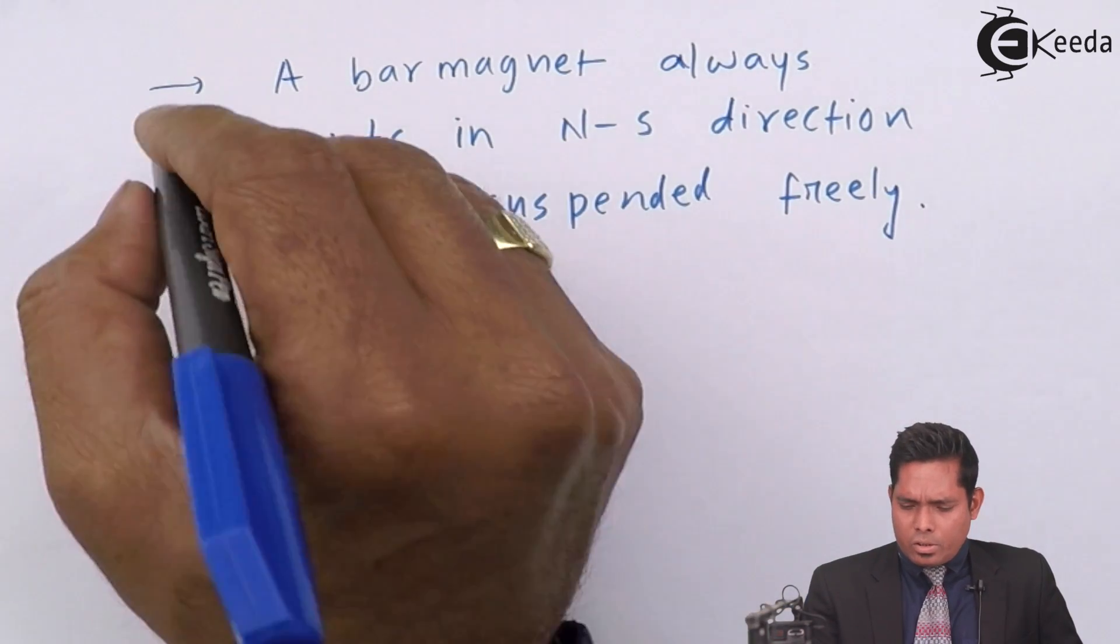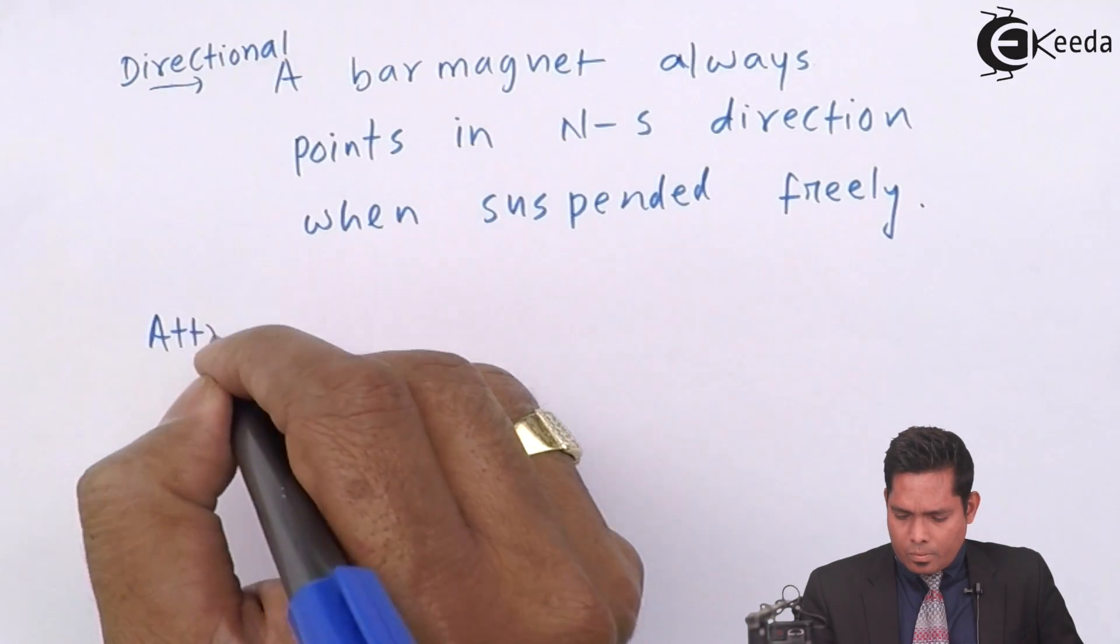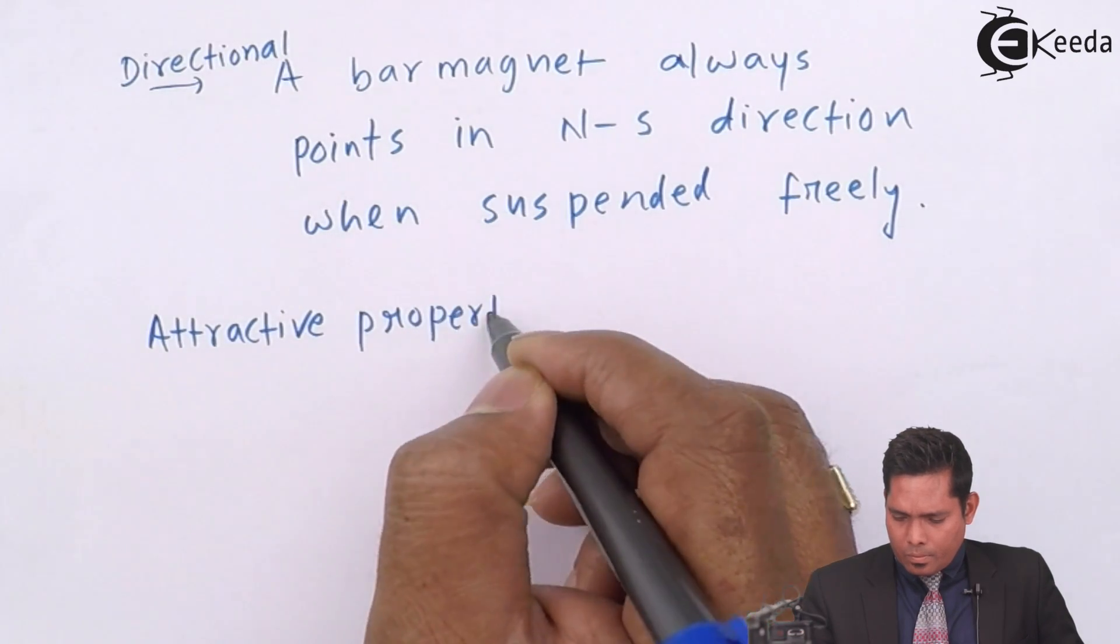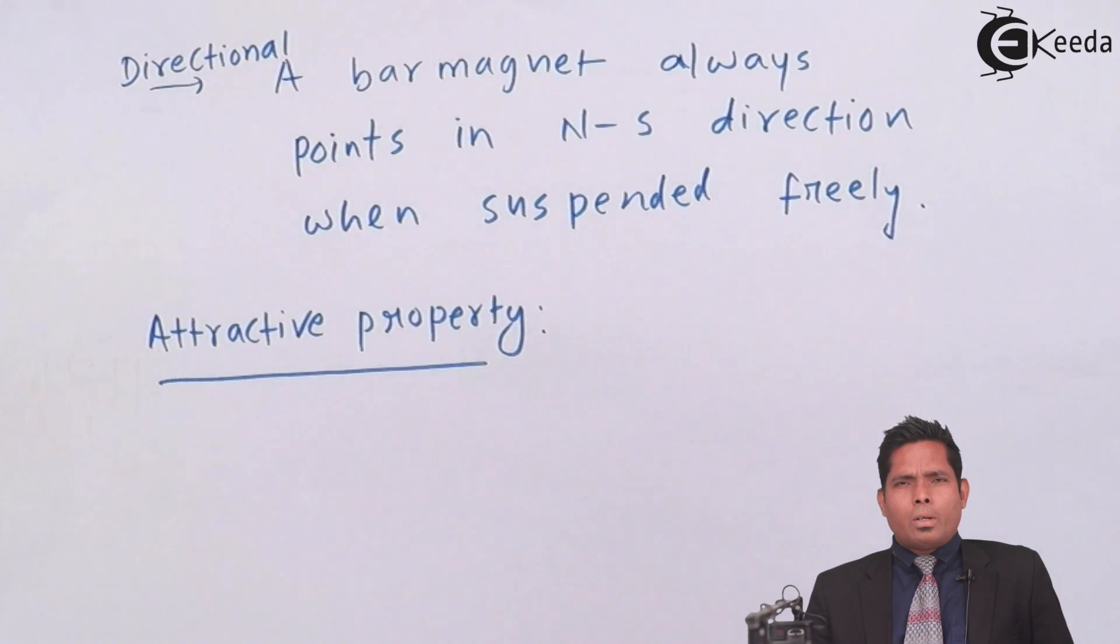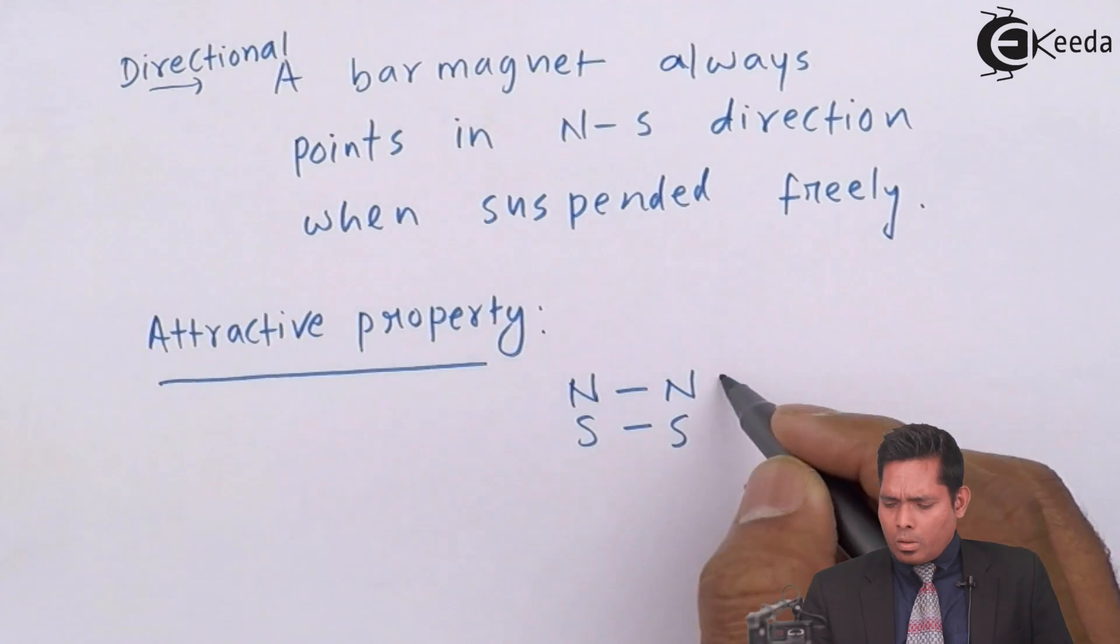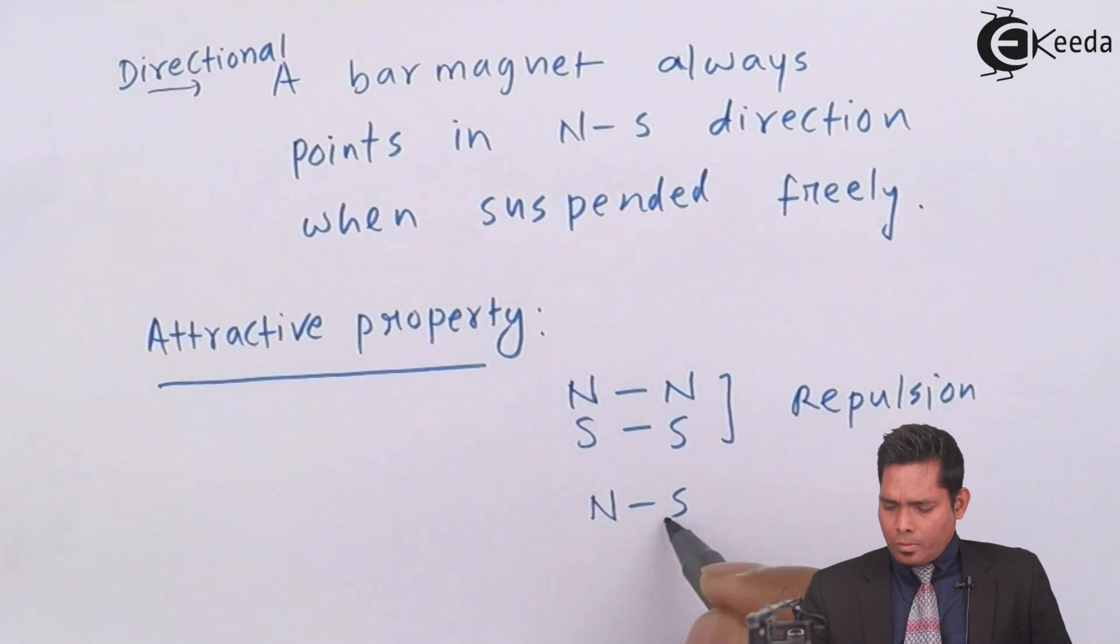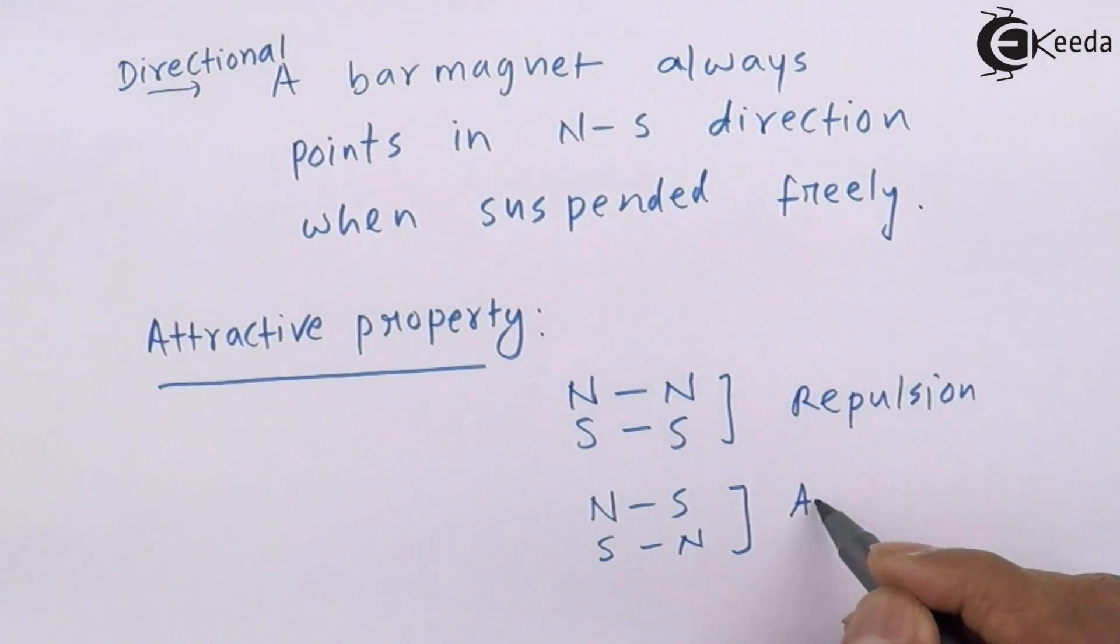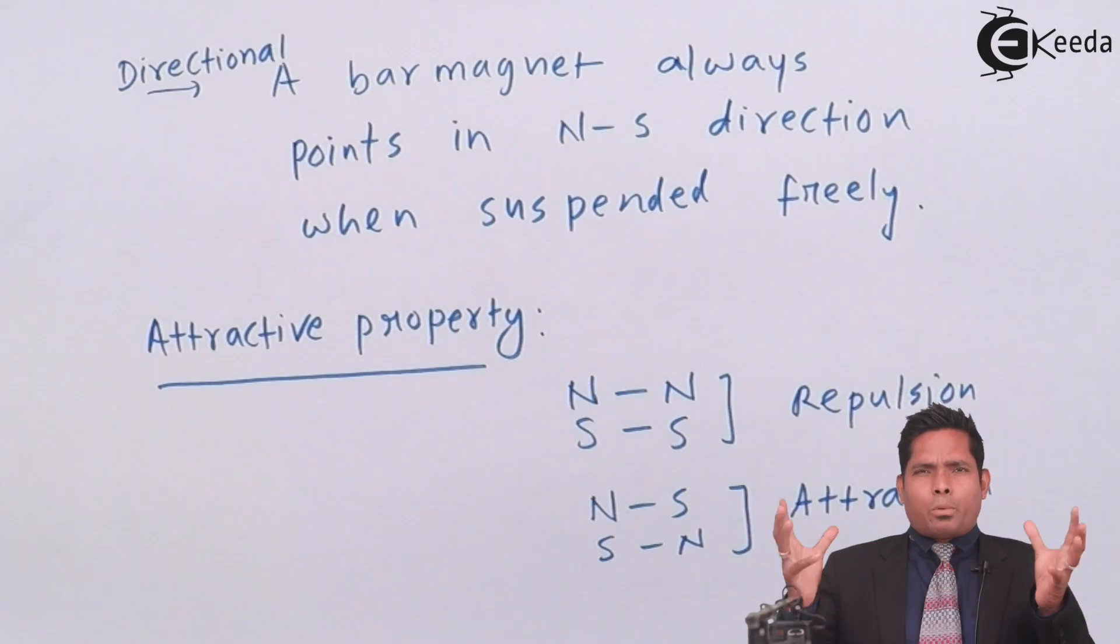Another is the attractive property. This is the directional property. The attractive property is that if you bring different poles or like poles, they will attract and like poles they repel.